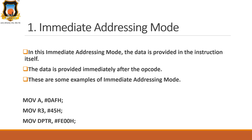These are the examples of immediate addressing mode: MOV A, #0AFH — the hash sign indicates it is immediate data; MOV R3, #45H; and MOV DPTR, #FE00H.